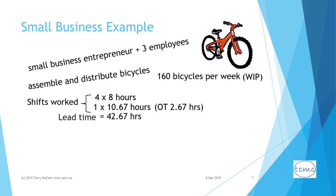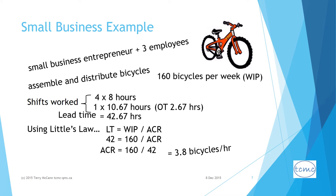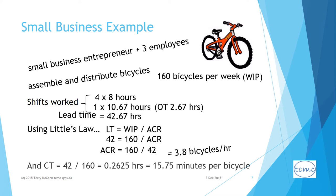From Little's Law, we know work in progress inventory equals 160 bicycles and lead time equals 42 hours and 40 minutes. From these two variables, the average completion rate is 3.8 bicycles per hour and the cycle time is 15 minutes and 45 seconds per bicycle.